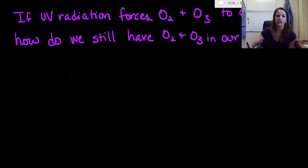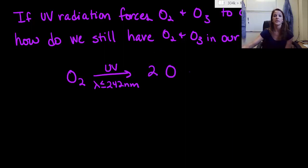To start off with, we look at oxygen. We already know that when oxygen interacts with UV radiation of very high energy, wavelengths less than or equal to 242 nanometers, oxygen breaks apart into two monatomic oxygens. From here,